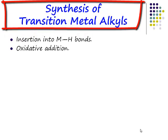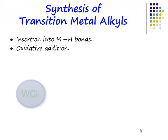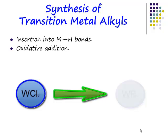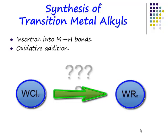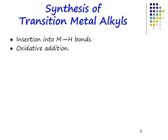Synthesis of transition metal alkyls. If you had tungsten hexachloride and you wanted to make a tungsten alkyl complex, how would you do it? By comparison to the main group chemistry that we learned, if you wanted to make a transition metal alkyl complex from the metal halide, how would you do it?